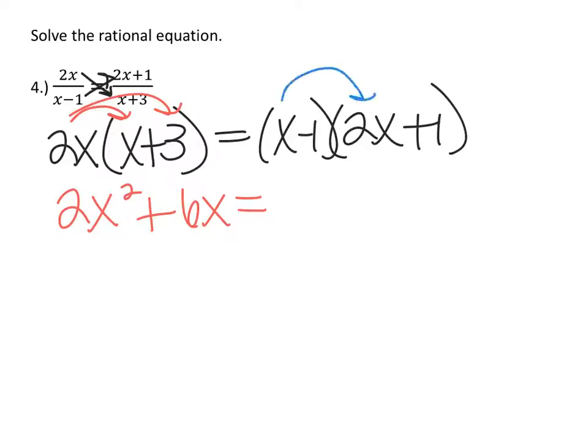So x times 2x is 2x squared. x times 1 is positive x. Negative 1 times 2x is negative 2x. And negative 1 times 1 is negative 1.